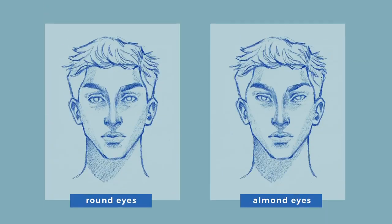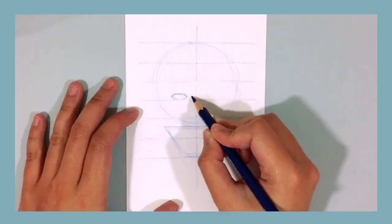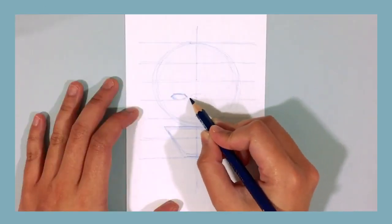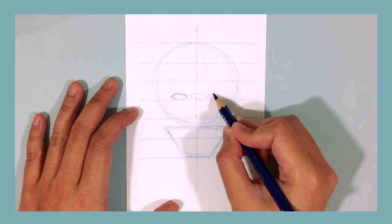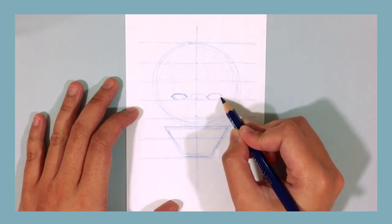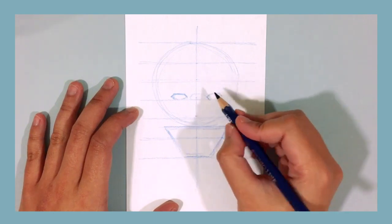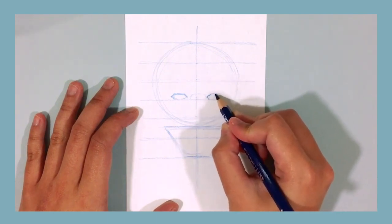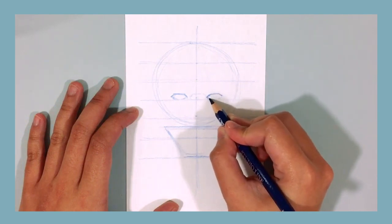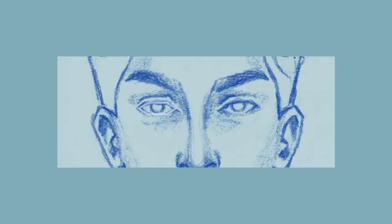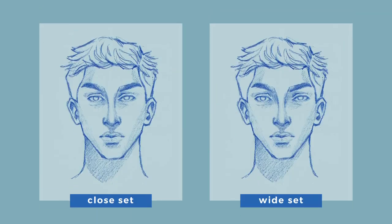To draw the other eye, what you can do is simply draw the same shape next to the eye that we've drawn, and then draw a third eye next to it. Then erase the middle eye, and you've got two eyes. This follows the rule that the distance between each eye is another eye. Now this is a general rule, but you can totally ignore it because you can draw the eyes closer together for close-set eyes or further apart for wide-set eyes.